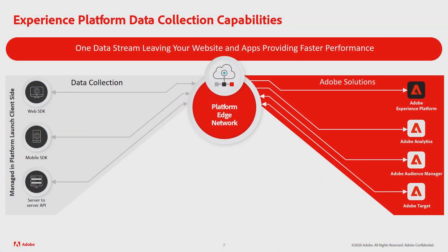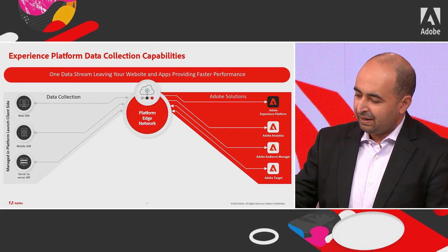Adobe addresses this challenge by bringing in the principle of using durable identifiers and providing rocket-speed streaming of data through events, data fragments, and combining them into real-time profiles. We now have one data stream leaving our website — whether at point of sale, mobile app, or email — all streamed directly to Adobe Experience Platform and redistributed to different Adobe solutions.